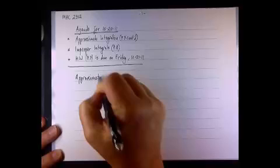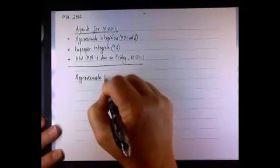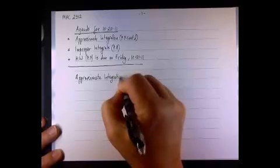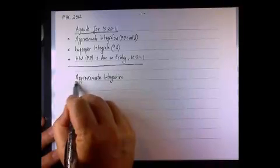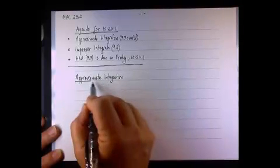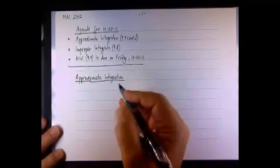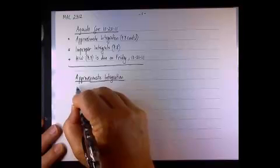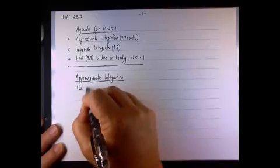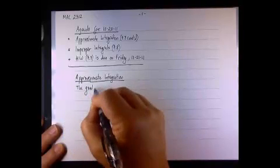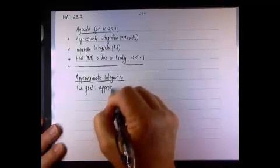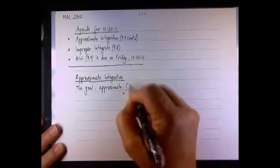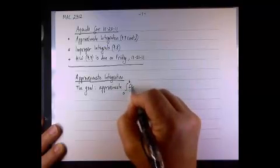So approximate integration - this is what we know to do so far. What we're trying to do is approximate the definite integral from a to b of f of x dx.